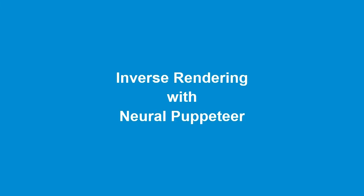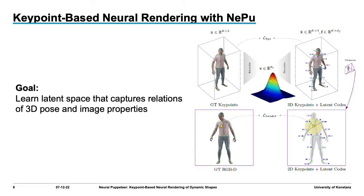Let us now take a closer look at how Nepu works step by step. For our inverse rendering solution, it is crucial to learn the relations of pose — defined by 3D keypoint positions — and resulting 2D image properties such as RGB, silhouettes, and depth. Once such a prior is learned, we can later use it to infer 3D keypoints from given 2D observations. In the next slides, we explain our differentiable forward rendering step by step.